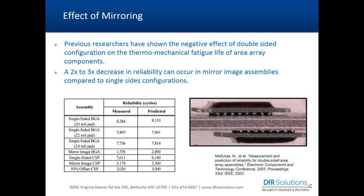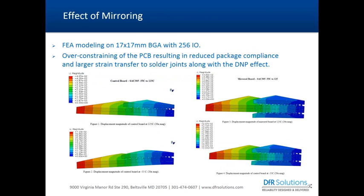Why do mirrored packages experience lower fatigue life? Finite element simulations clearly illustrate that warping of a single-sided component significantly contributes to damage accumulation, and mirroring over-constrains your package and board deflection, transmitting higher axial loads to the solder joints. Essentially, the load sharing between package and board is now absorbed more by the solder joints than for a single-sided package.